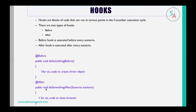Generally, we use hooks in Cucumber with respect to Selenium for opening the browser and launching the URL. Code for initializing the driver and launching the URL is kept in the before hook method, whereas code for closing the browser after every scenario is kept in the after hook method. So before every scenario you launch the browser and load the URL, and after every scenario you close the browser that was opened.